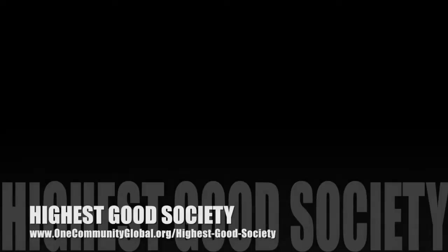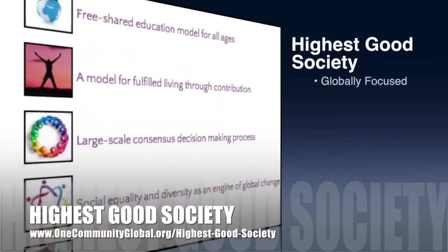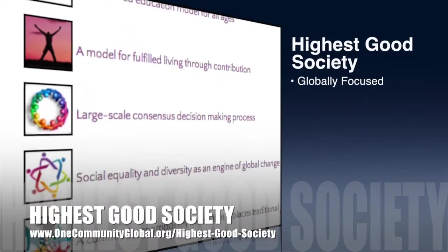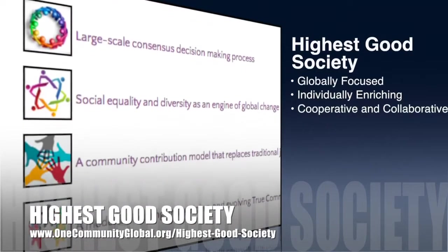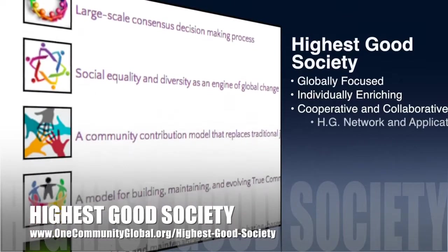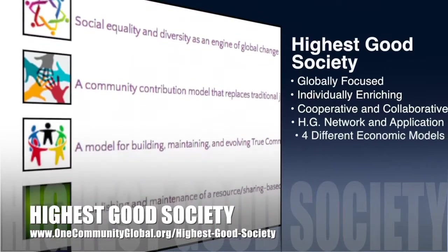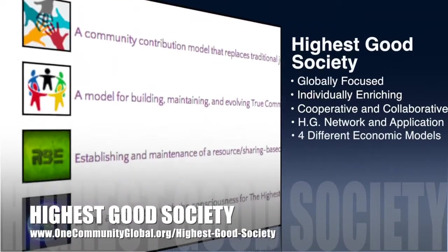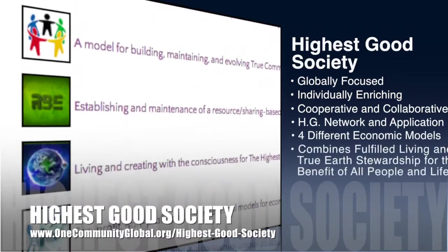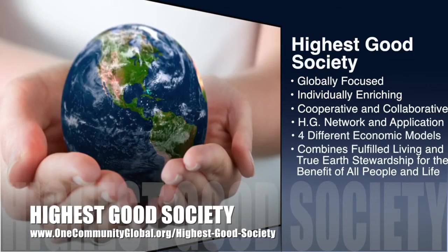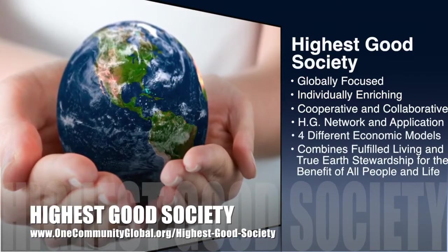The One Community approach to Highest Good Society is globally focused, individually enriching, cooperative and collaborative. It includes a Highest Good network and application, four different economic models, and combines fulfilled living and true earth stewardship for the benefit of all people and all life on this planet.